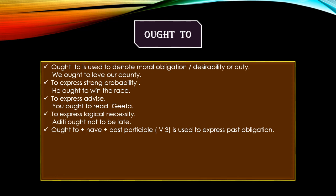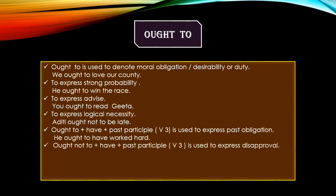'Ought to + have + past participle (verb third form)' is used to express past obligation. For example: 'He ought to have worked hard.' Note: although modals generally take the verb first form, when 'have' is present in the structure, we use the verb third form. 'Ought not to + have + past participle' is used to express disapproval — for example: 'We ought not to have laughed at her mistake.'